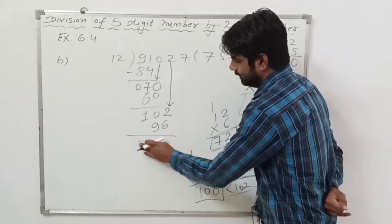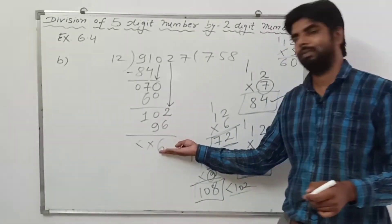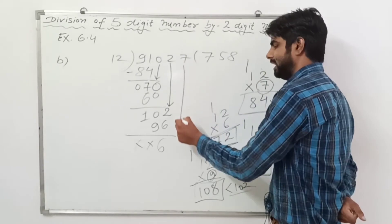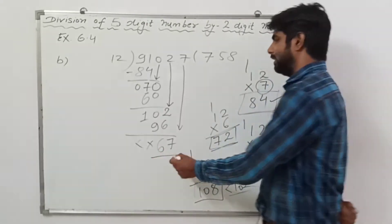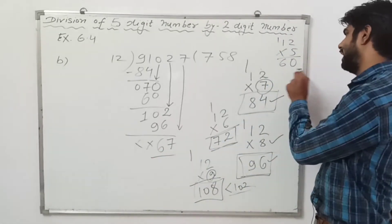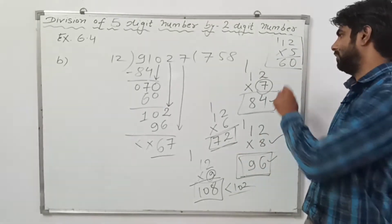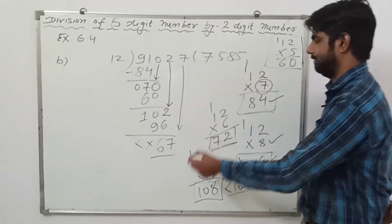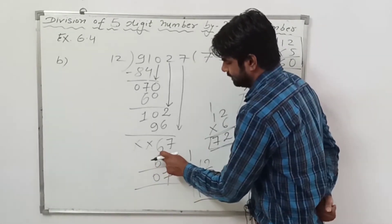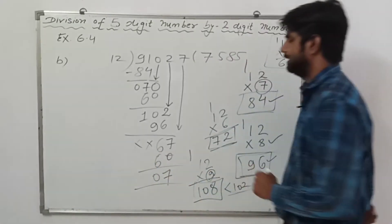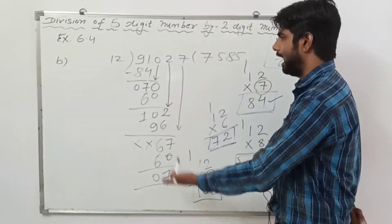We subtract 96 from 102 and get 6. Now one digit is left; we bring down 7 and write 67. Again we read the table of 12: 12 times 5 is 60 and 12 times 6 is 72, so we take 5. 12 times 5 is 60, and subtracting 60 from 67 gives 7. Our division is now complete as there are no more digits.